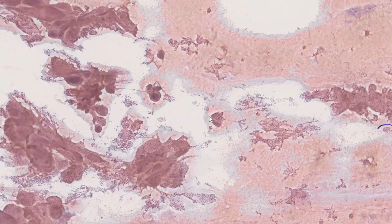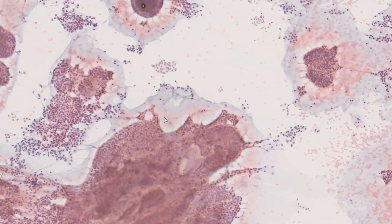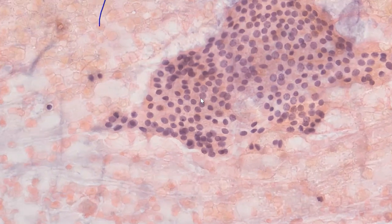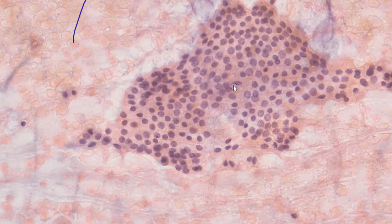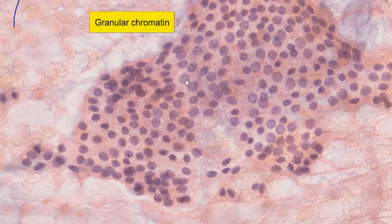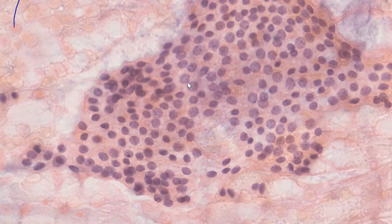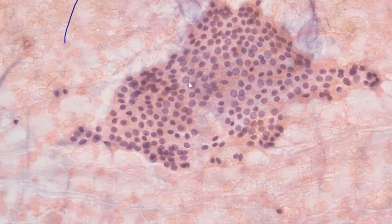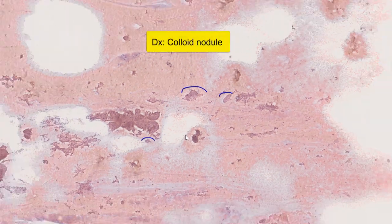Colloid can appear variable in color in the alcohol-fixed smears. Here you can see it's a little bit orangophilic; over here, it's just pale blue-gray; sometimes it can appear greenish as well. Focusing on this very nice honeycomb sheet of cells, you can again make out that the nuclei are quite small relative to the red blood cells, and you can just about see that there is granular chromatin. This is very reassuring and is in contrast to the very pale and powdery chromatin that we would see in papillary thyroid carcinoma.